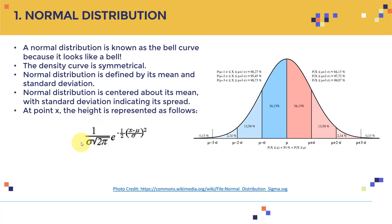At point X, the height is represented by the equation shown here — don't worry too much about the equation. For one sigma, two sigma, and three sigma, as you increase sigma you move farther away from the mean.